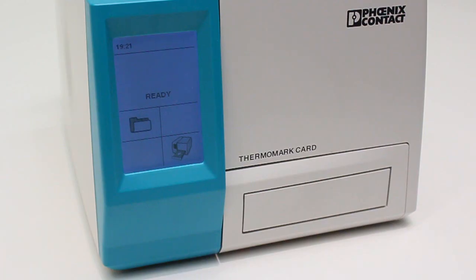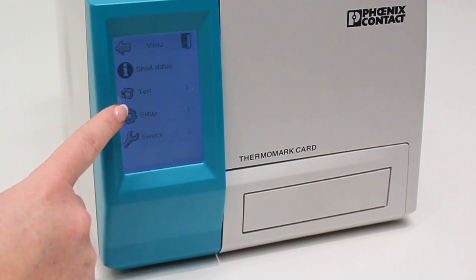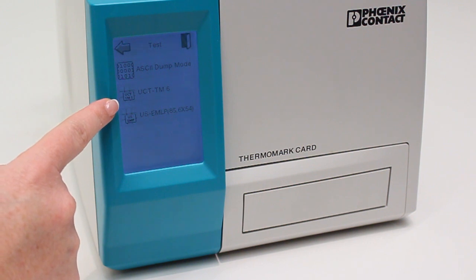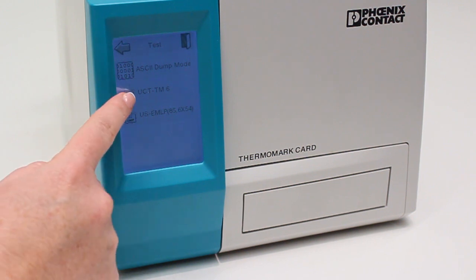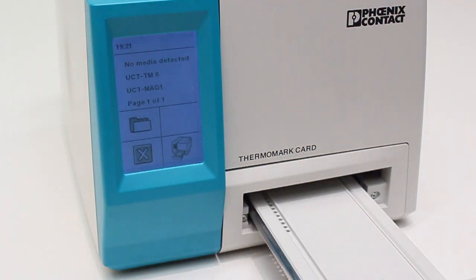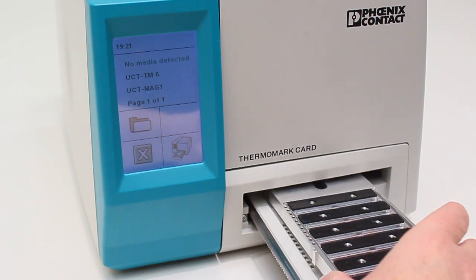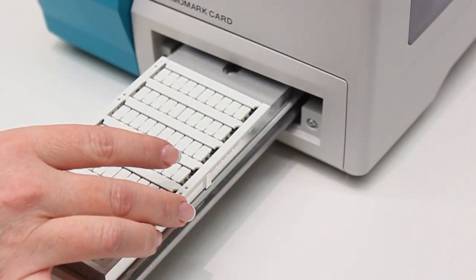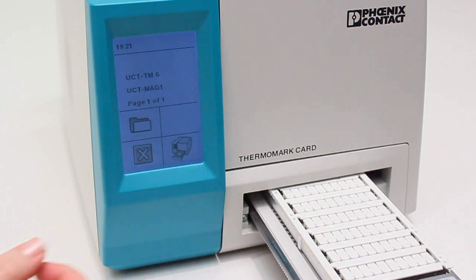To perform the test print, touch the folder icon, touch the test icon, choose the UCT TM6 or US EMLP test, insert magazine and material, and touch the printer icon.